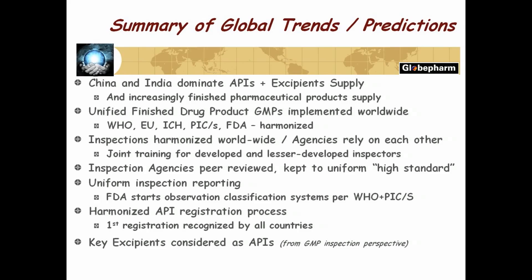A few predictions — this is me and my crystal ball. India and China will dominate the APIs and excipient supply, and increasingly finished pharmaceutical product supply. The biggest area in India for finished dosage forms is around Hyderabad, Andhra Pradesh — they export 40% of all generic drugs used in Europe from that one state. China is responsible for 80% of all API sales worldwide; in the United States about 65% of all APIs come from China, about another 20% from India, and the rest from everywhere else. India and China are set to dominate.